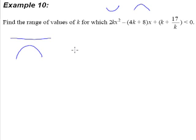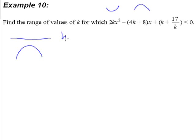Therefore, the only way that we are going to have a quadratic curve that is always less than zero will be that it has to be a maximum curve — a frowny face curve like this. So if it has to be a frowny face curve that is always underneath the x-axis, it means that there is no intersection with the x-axis. When there is no intersection, there are no roots, and therefore our b² minus 4ac will be less than zero.